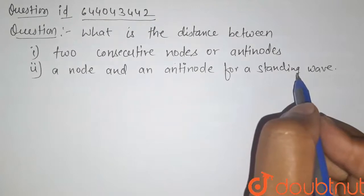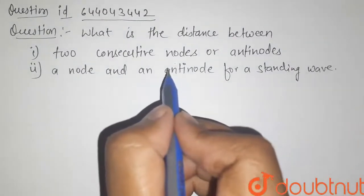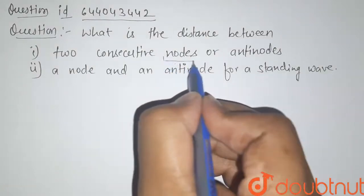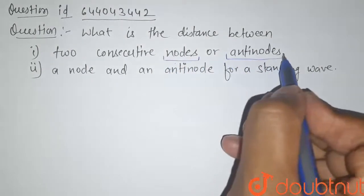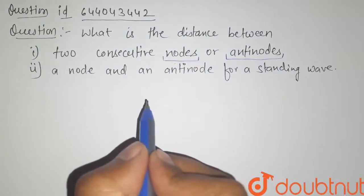So to find this, first of all we have to understand what is node and what is antinode. Let us try to understand this through a figure.